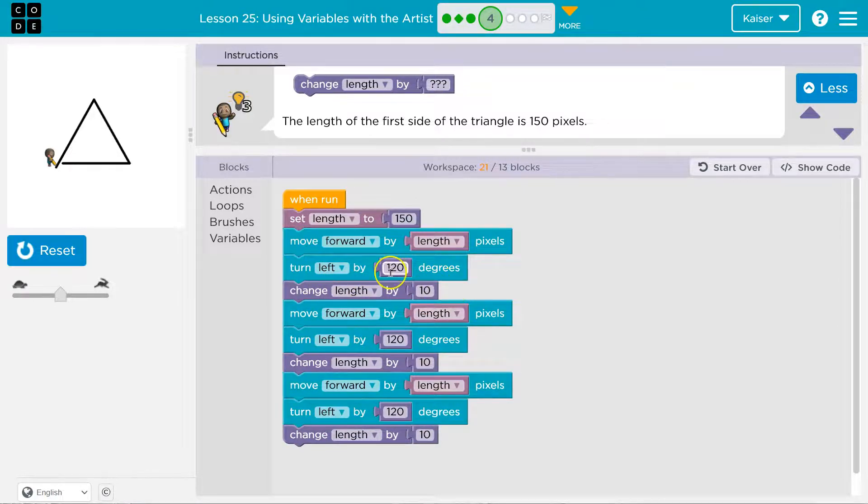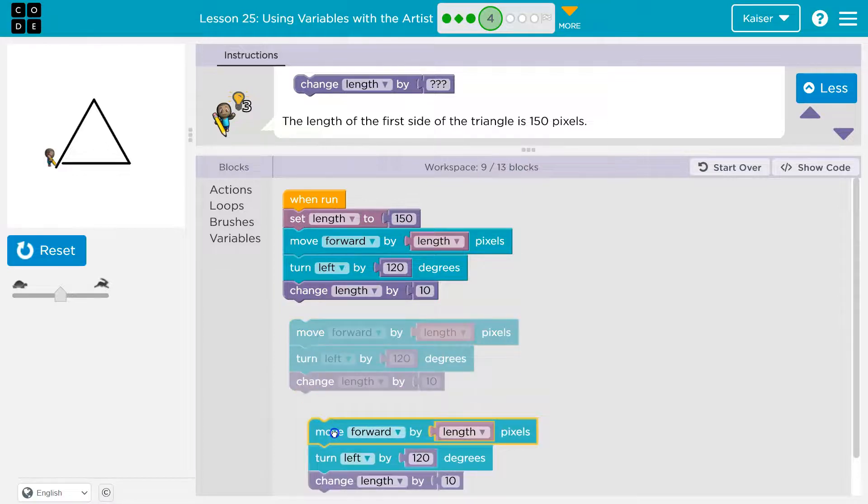So what are we doing? I move forward. I turn left. I change length by 10. Move forward, left, length by 10. I hope you're noticing this is the repeated code. There's a few things I want to hit upon first though.